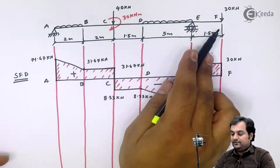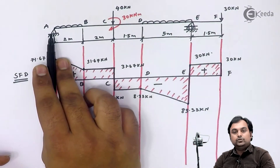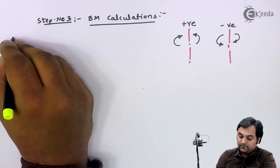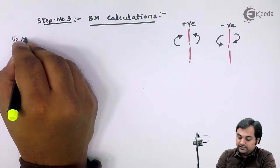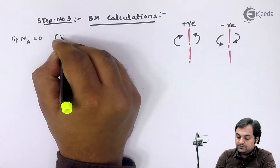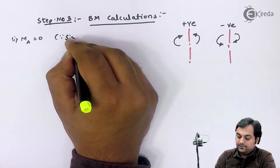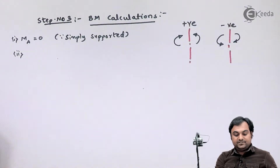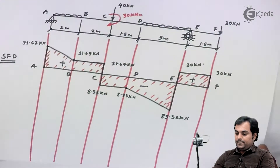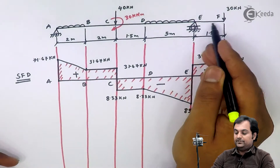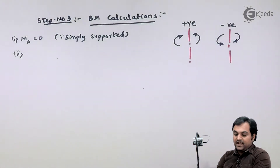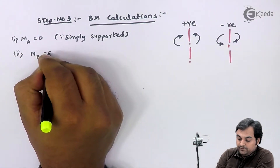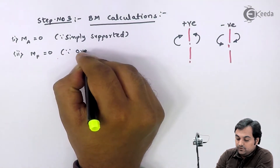Since this beam is supported at A and free at F, the bending moment at the support will be zero. Moment at A is equal to zero since it is simply supported. At the free end, point F, the bending moment is also zero because it is an overhanging portion, and for an overhanging portion the moment is zero.